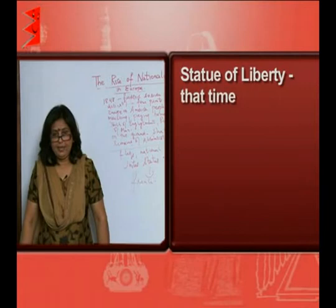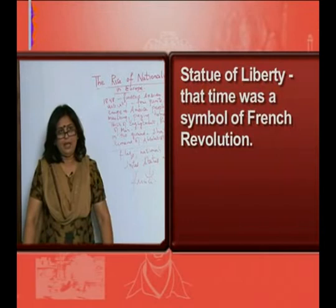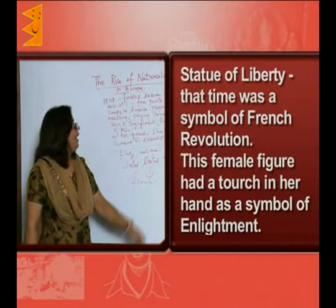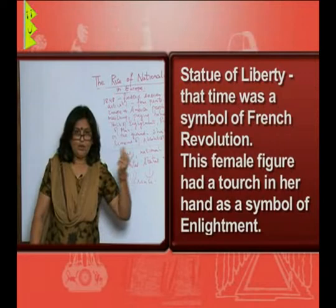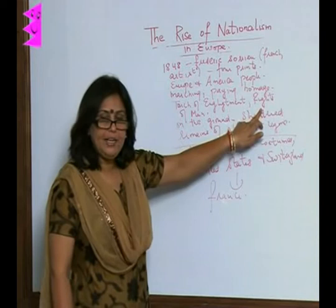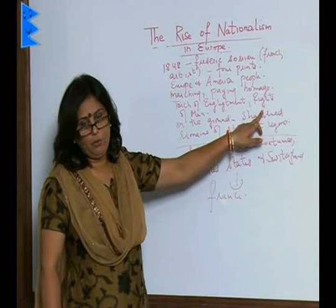The Statue of Liberty at that time was actually a symbol of the French Revolution. This Statue of Liberty was depicted as a lady who had a torch of enlightenment in one hand and the Rights of Man and Citizen — a declaration — in the other hand. If you remember your Class 9 history chapter on the French Revolution, you will immediately recollect the Rights of Man and Citizen which came out after the French Revolution.